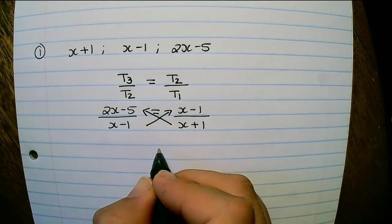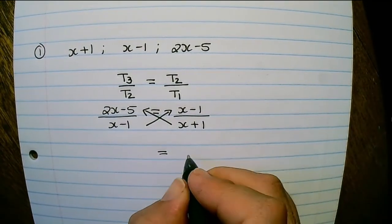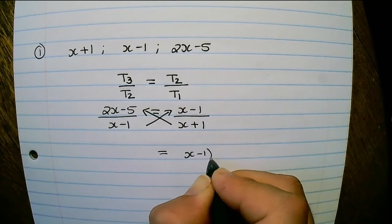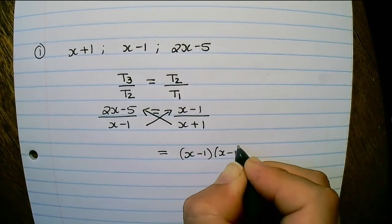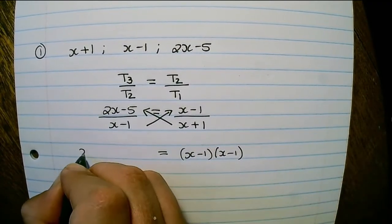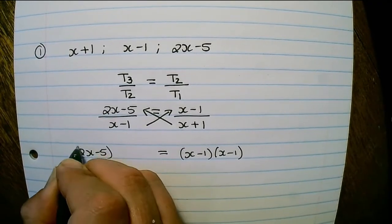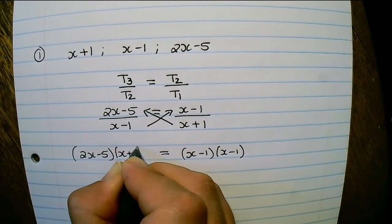Now to remove the fraction I'll cross multiply. So it'll be x minus 1 times x minus 1 on the right and 2x minus 5 multiplied with x plus 1 on the left.